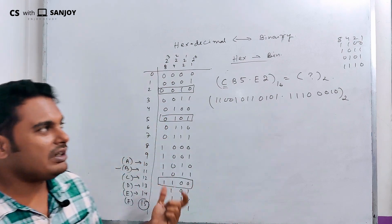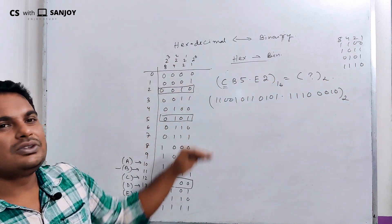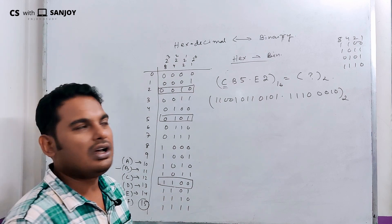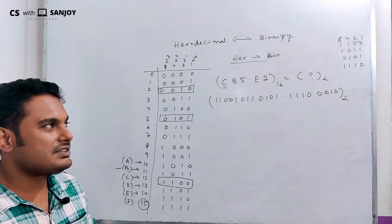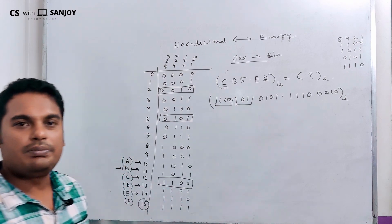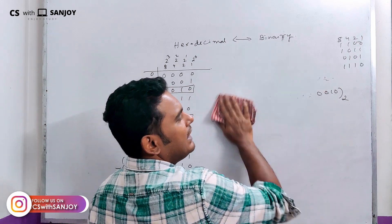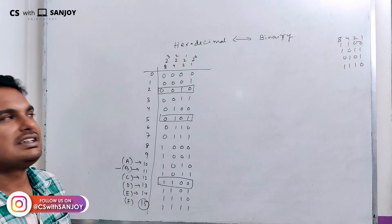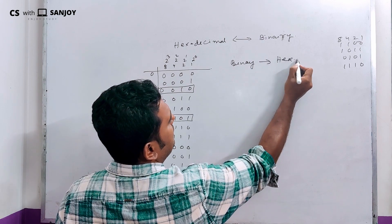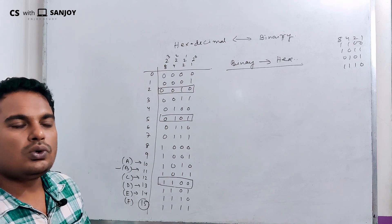It's very easy. Each hexadecimal digit is represented by 4 bits. So we convert each hex digit to its 4-bit binary equivalent. If we have a binary number, we can also convert it back to hexadecimal. How to convert binary to hexadecimal is again similar.